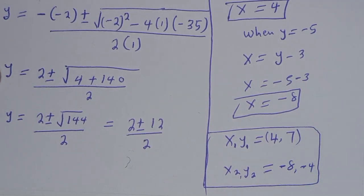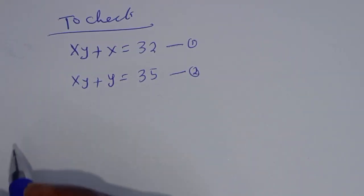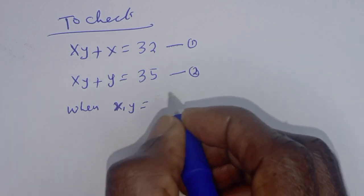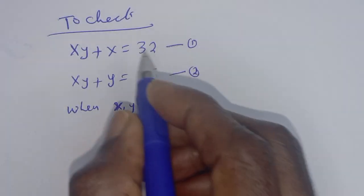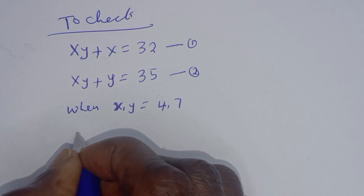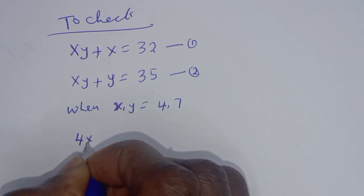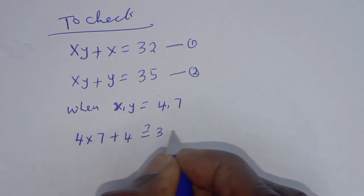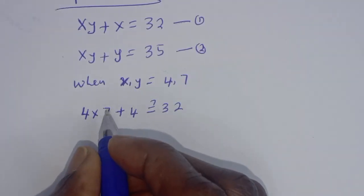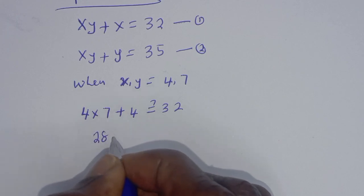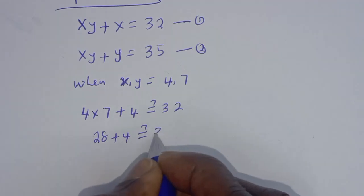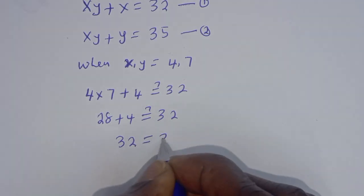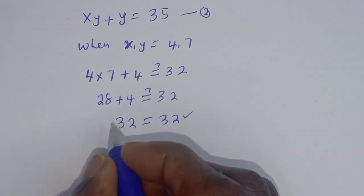Let's check using equation 1. When (x, y) equals (4, 7): 4 multiplied by 7 plus 4 must equal 32. That gives 28 plus 4 equals 32, which is true.